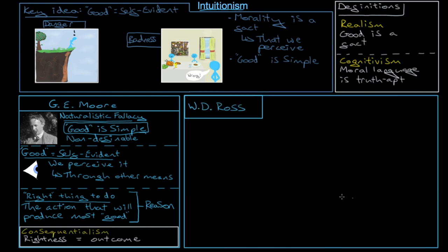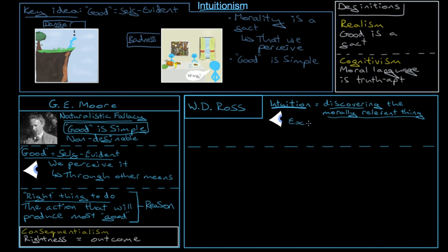Another famous intuitionist was W.D. Ross. Now W.D. Ross has a slightly different understanding of intuition. He thinks that intuition is discovering the morally relevant things. So essentially what you do is you examine a scenario. You examine a situation and then you work out what is good or bad in that situation. Again, we experience it. It's through the senses but a bit like this, that we are perceiving the badness just like we perceive the danger or the beauty or whatever in various things. It is a fact that we discover in the world.